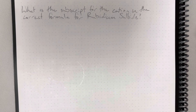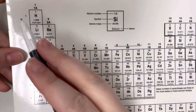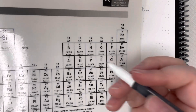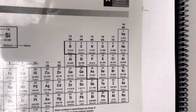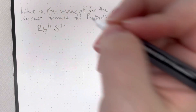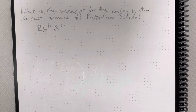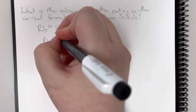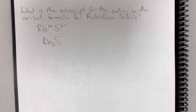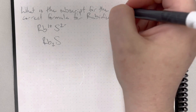What is the subscript for the cation in the correct formula for rubidium sulfide? Rubidium has element symbol Rb and is in column 1, so it has one valence electron. It gives that away, giving a charge of positive 1. Sulfide is secretly sulfur, element symbol S, in column 6. Having six valence electrons means it wants eight and steals two to reach the octet. Stealing is bad, so it has a charge of negative 2. I crisscross charges for subscripts and am left with Rb₂S. The ratio 2 to 1 cannot be simplified, so the formula is correct.